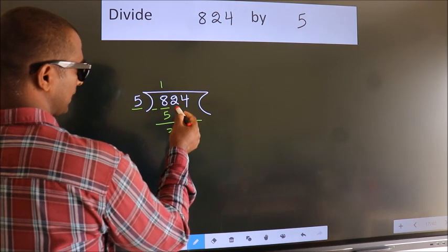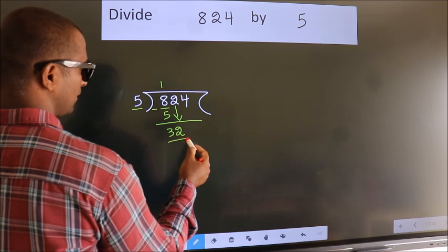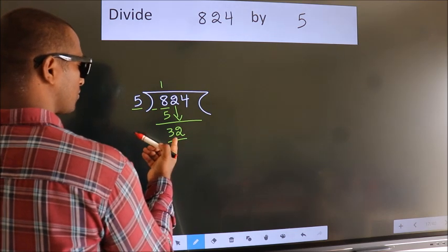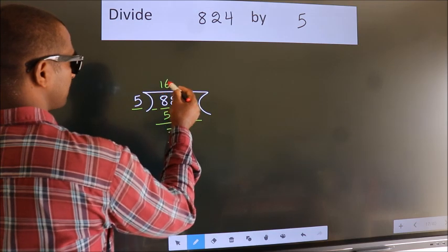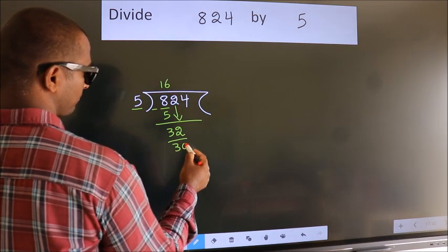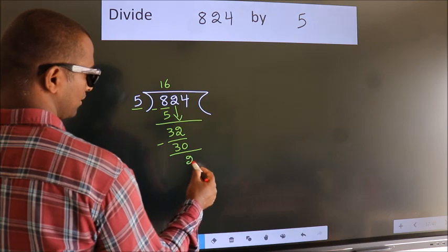After this, bring down the beside number. So, 2 down. So, 32. A number close to 32 in 5 table is 5, 6, 30. Now, we subtract. We get 2.